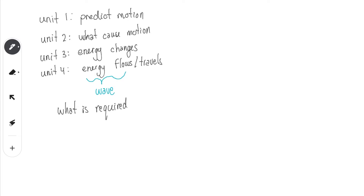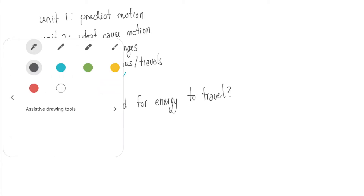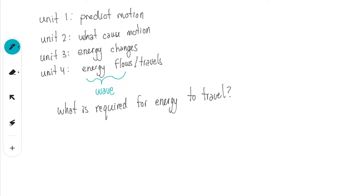What is required for energy to travel in the first place? For energy to travel, let's look at some examples of a wave — that way it helps us make some generalizations. The easiest one is the beach: we see water waves. So in this case, what is required for a water wave? Water. What is another example of a different type of wave?